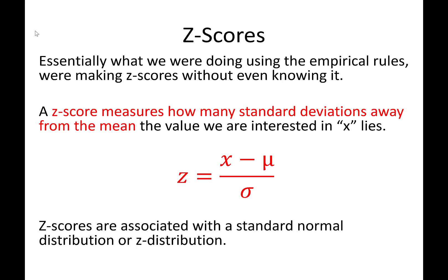So, for instance, when we were going one, two, or three standard deviations away from the mean, those were z-scores. Values a certain number of standard deviations away from the mean.